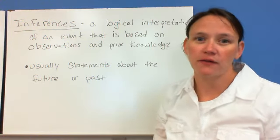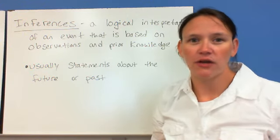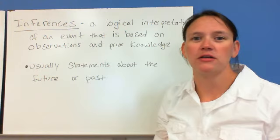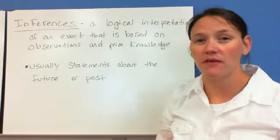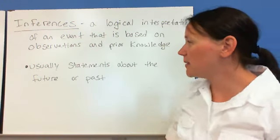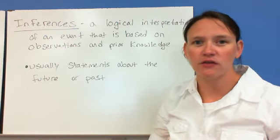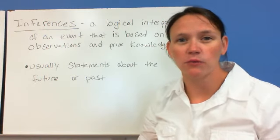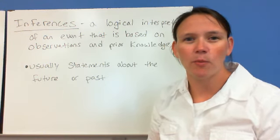We can also use inferences talking about things in the past. If we try to figure out a certain geological formation, we're inferring how that actually formed because we weren't there to witness its formation. So that is the big difference between an observation and an inference. An observation is something that we can observe. We can witness it. An inference is a little bit more open to interpretation.